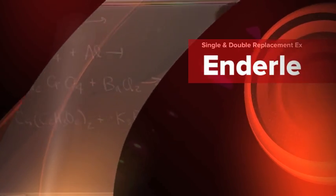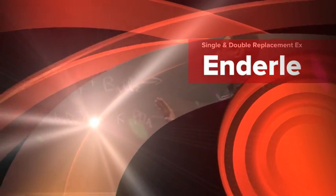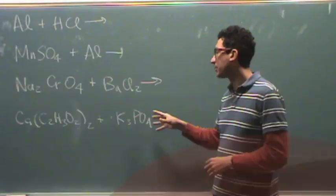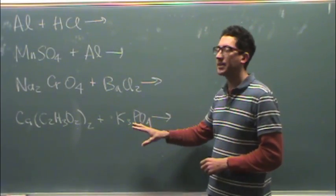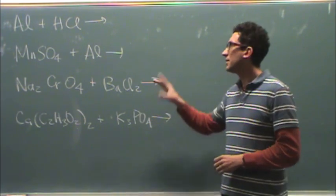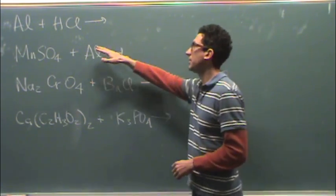Alright, I wanted to slow it down a little bit here since we're outside of class and show you how I write the products for either a single or double replacement reaction and how to get the correct subscripts, especially when we're talking about ionic compounds.